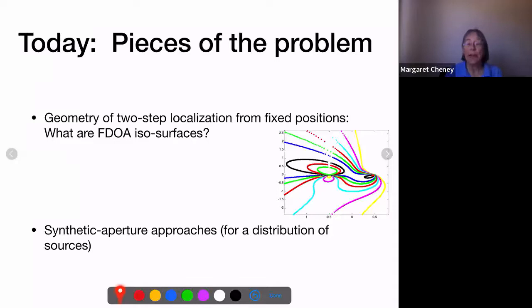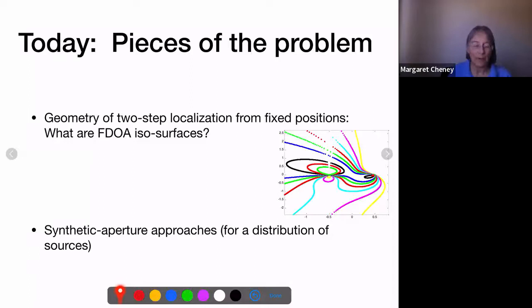Today I'll talk about two small pieces of this big problem: first, what to do about these FDOA surfaces and the interesting geometry involved; and second, I'll try to say something about synthetic aperture approaches — a one-step method combining the imaging approach with synthetic aperture.